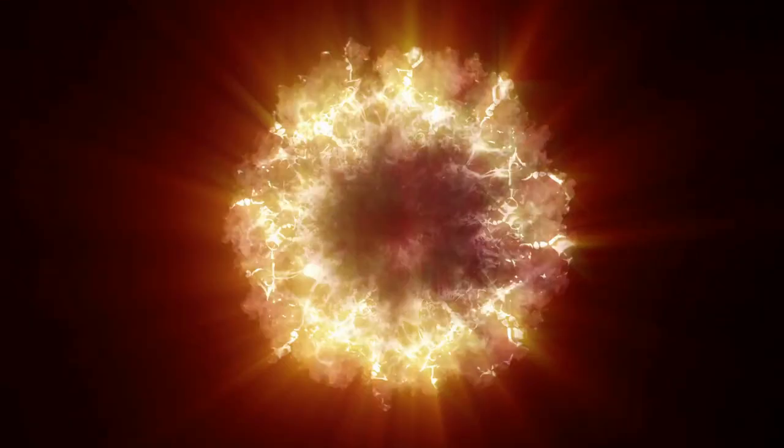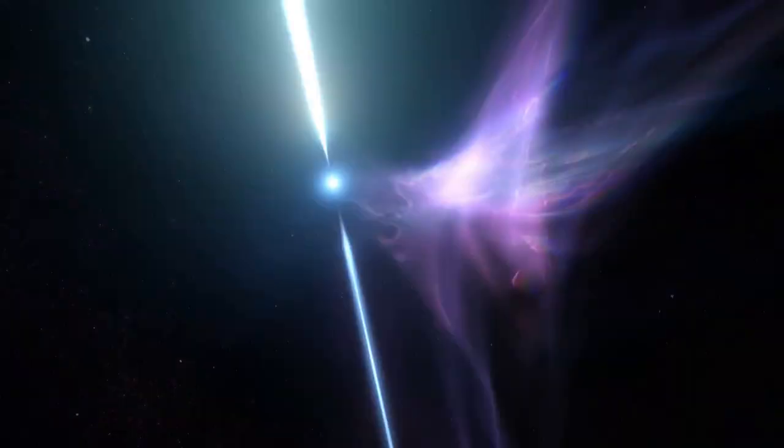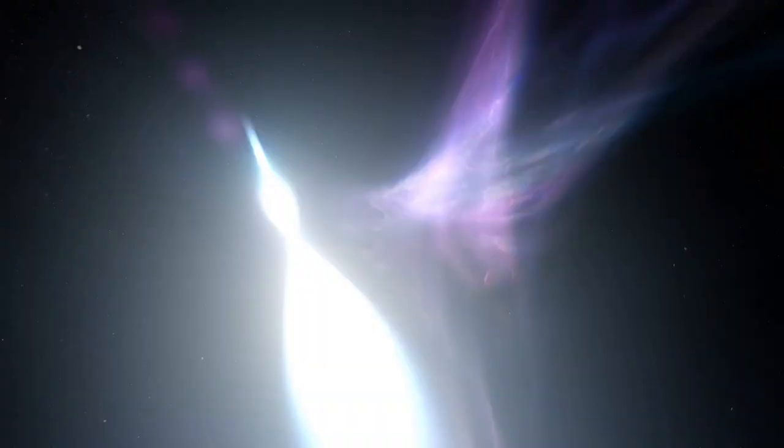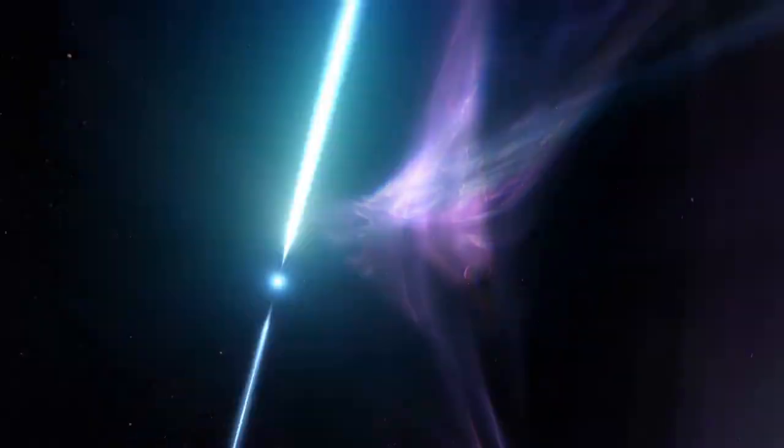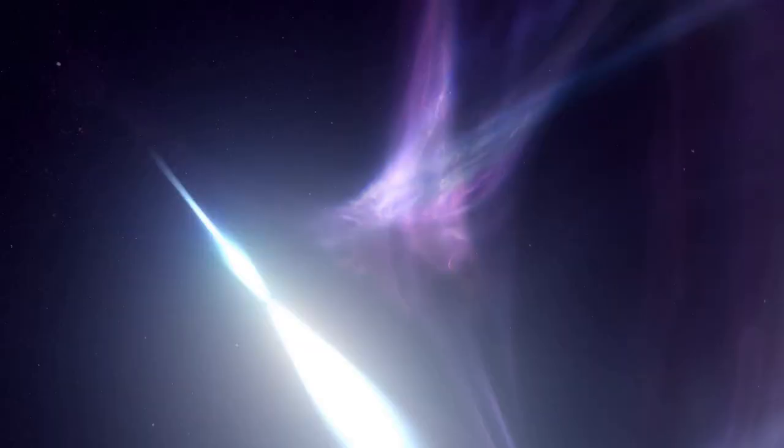This shockwave, composed of high-energy particles and radiation, can disrupt any celestial bodies unfortunate enough to be caught in its path. These gamma ray bursts, though fleeting, are some of the most energetic events in the universe. They can be detected across billions of light years, carrying with them the echoes of these cataclysmic starquakes. For a brief moment, the magnetar announces its presence to the cosmos, a beacon of extreme power in the vast cosmic ocean.